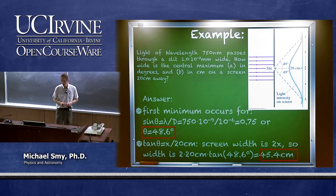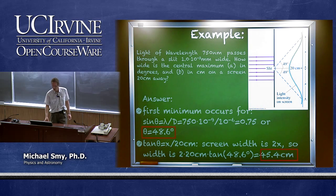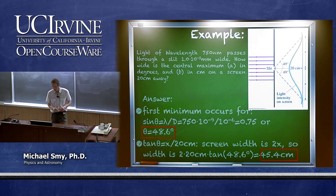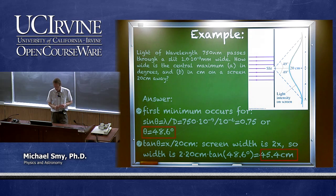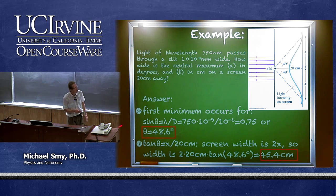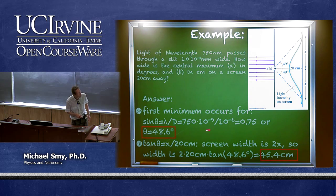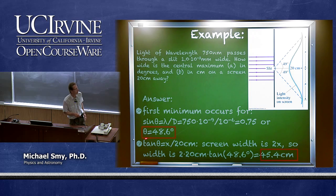Let's calculate an example. Assume light of wavelength 750 nanometers passes through a slit that is 10⁻³ millimeters wide — 1 micron or 10⁻⁶ meters. How wide is the central maximum in degrees, and how wide is it on a screen 20 centimeters away? We use the first order minimum: sine theta equals lambda divided by the diameter, which is 750 nanometers divided by 1 micron, giving 0.75, or theta equals 48.6 degrees.